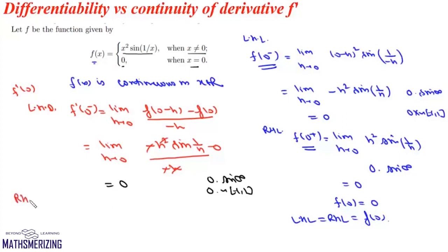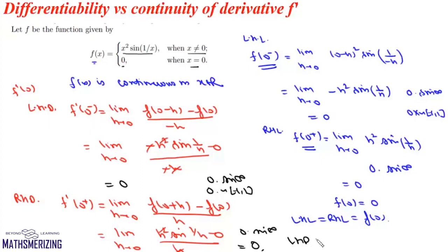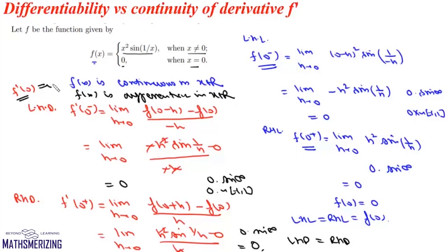The right-hand derivative at 0 is limit h→0 of [f(0+h) − f(0)] / h = limit h→0 of h²·sin(1/h) / h = limit h→0 of h·sin(1/h). Again the form is 0·sin(∞), which is 0. Since the left-hand derivative equals the right-hand derivative, f is differentiable at x = 0, and f'(0) = 0. So f is differentiable on ℝ.